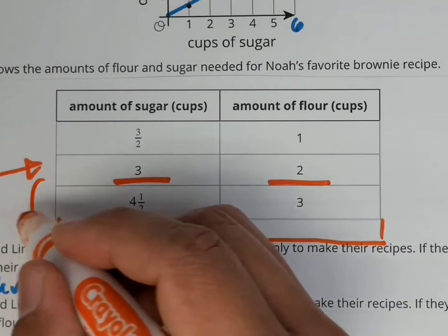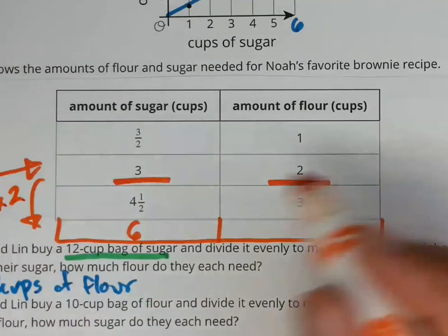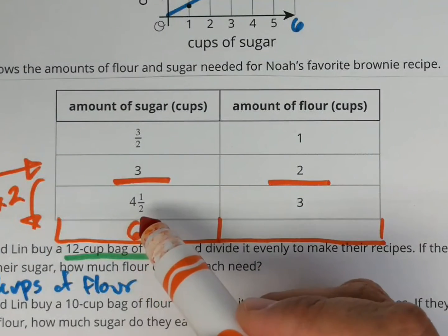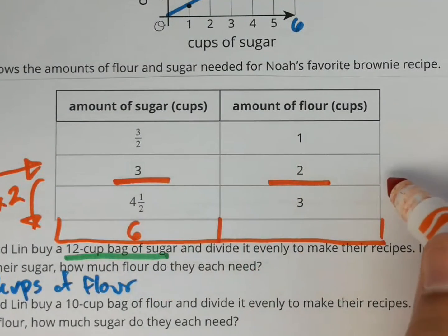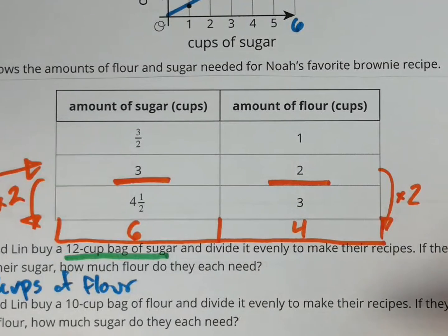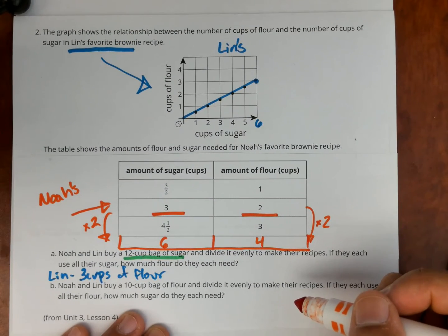So because I can double it here, three times two is six, and this is proportional, then I can also double here on the right side, which will give me four cups of flour for Noah.